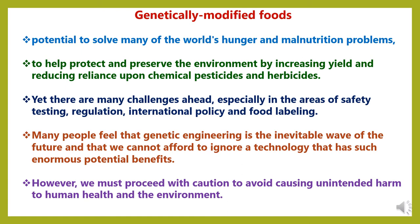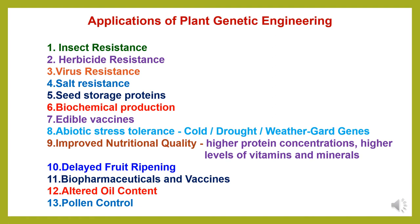How are genetically modified foods playing an important role? GM crops have the potential to solve many of the world's hunger and malnutrition problems. They are required to help protect and preserve the environment by increasing yield and reducing reliance upon chemical pesticides and herbicides. Yet there are many challenges ahead, especially in the areas of safety, testing, regulation, international policy and food labelling. Many people feel that genetic engineering is the inevitable wave of the future, but we must proceed with caution to avoid causing unintended harm to human health and the environment.